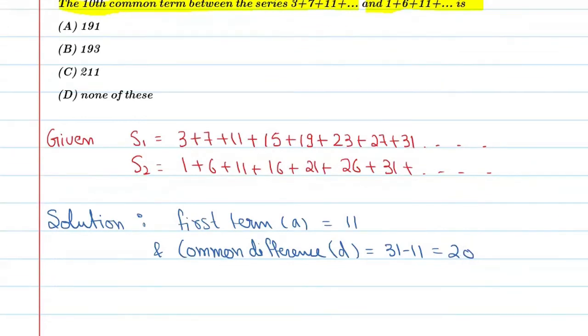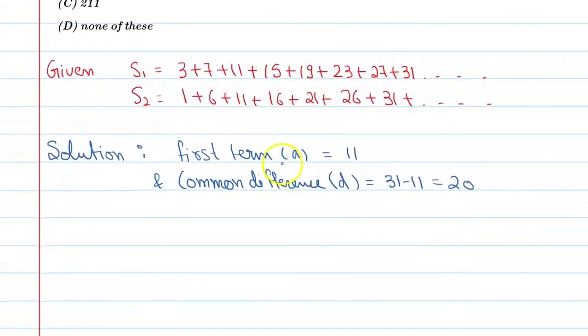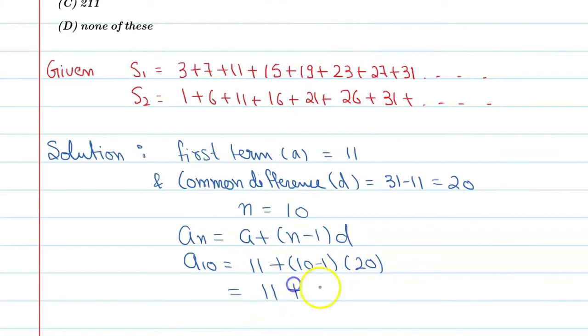And we need to find the tenth term which is common. So here N is equal to 10. And we know that An is equal to A plus N minus 1 into d. So A10, which is the common term of these two, is 11 plus 10 minus 1 into 20. So here you will get 11 plus 9 into 20, and this will be 11 plus 180.